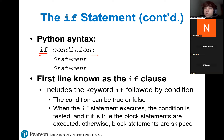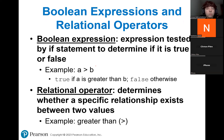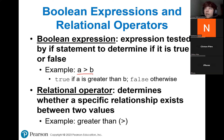The keyword 'if' is the main thing, then whatever condition and whatever you want your code to execute if that condition evaluates to true. Boolean expressions are what we put in our conditions after the 'if'. For example, 'a is greater than b' will evaluate to true if whatever is stored in a is greater than b, otherwise it evaluates to false.